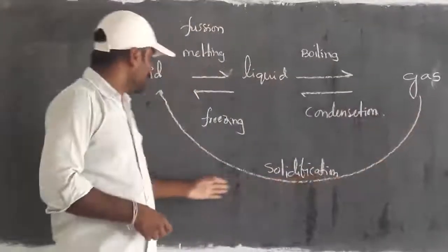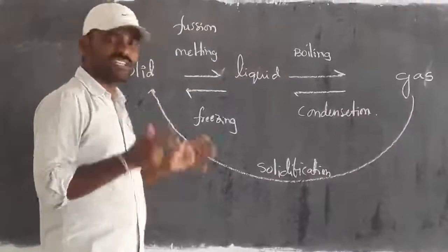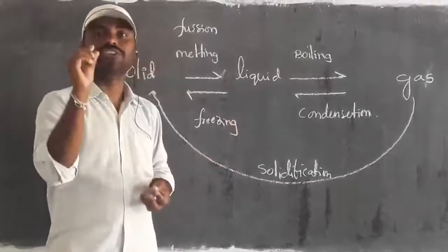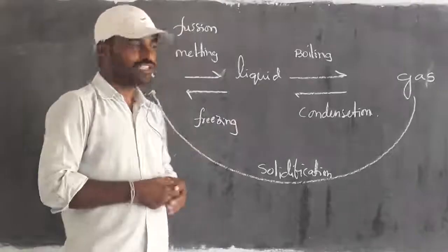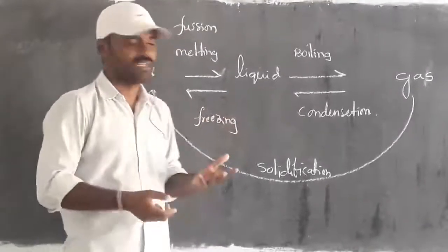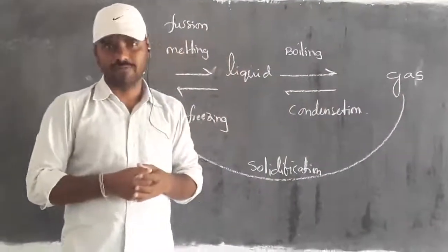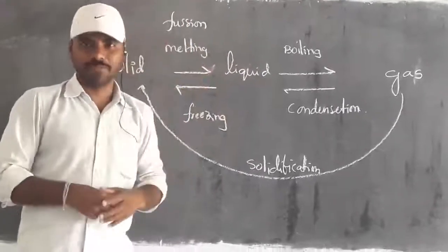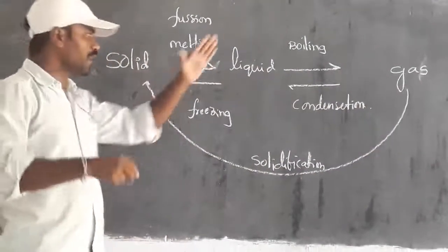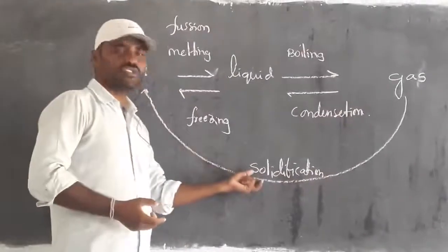Gas directly changing into solid is sometimes possible. Especially in the starting of monsoon season we can get water in the form of ice cubes — that we call hailstones. It is due to a drastic, sudden change in the temperature of the environment. In the clouds there is a large amount of water, but due to sudden change in temperature — a cooling process — it is able to change into solid form. So any gas which directly changes into solid, that process we call solidification.